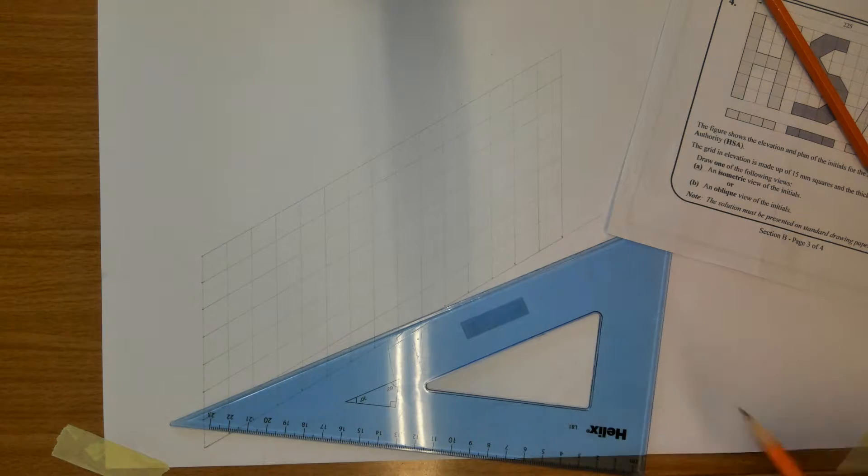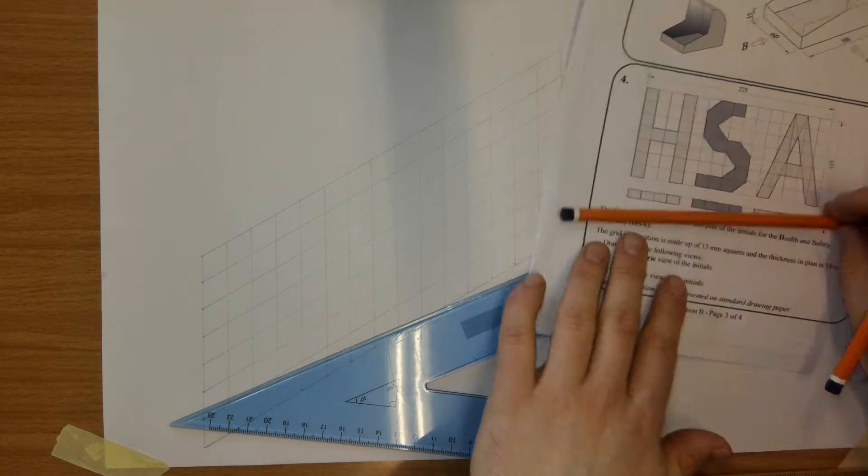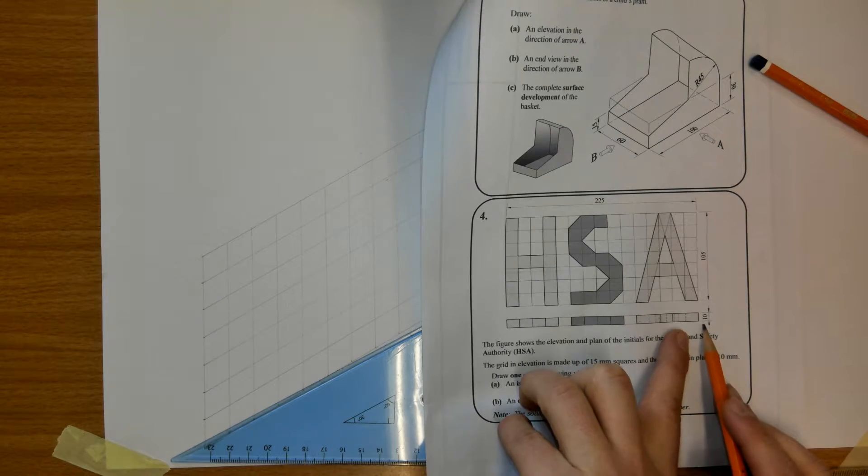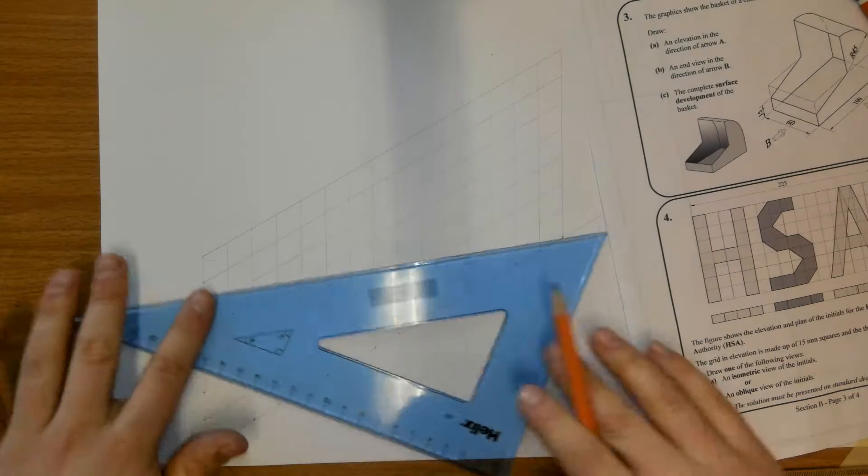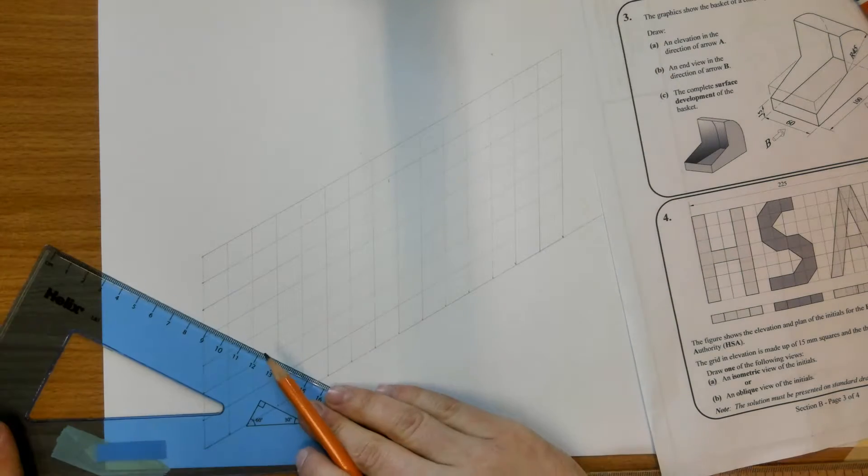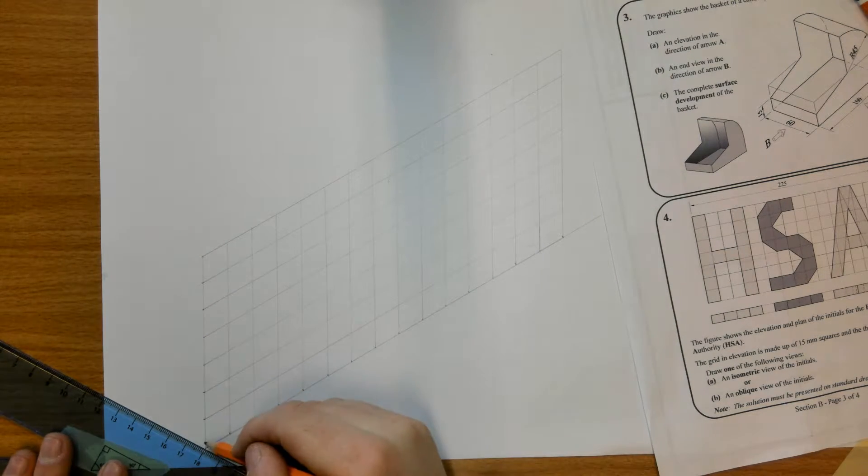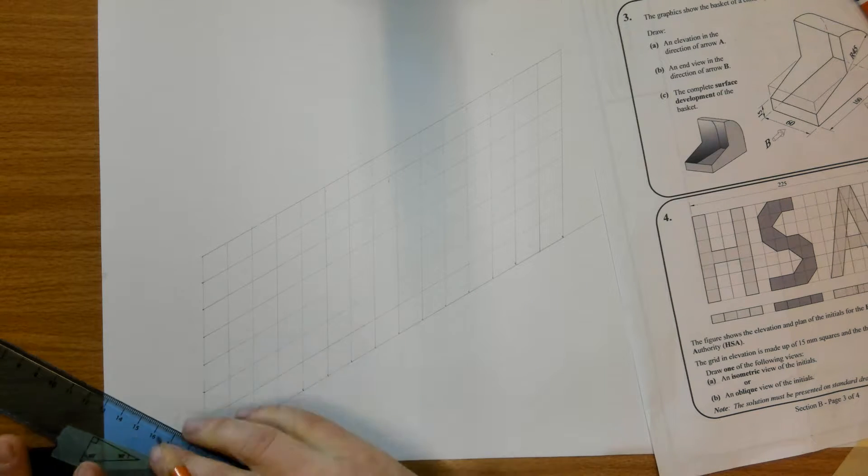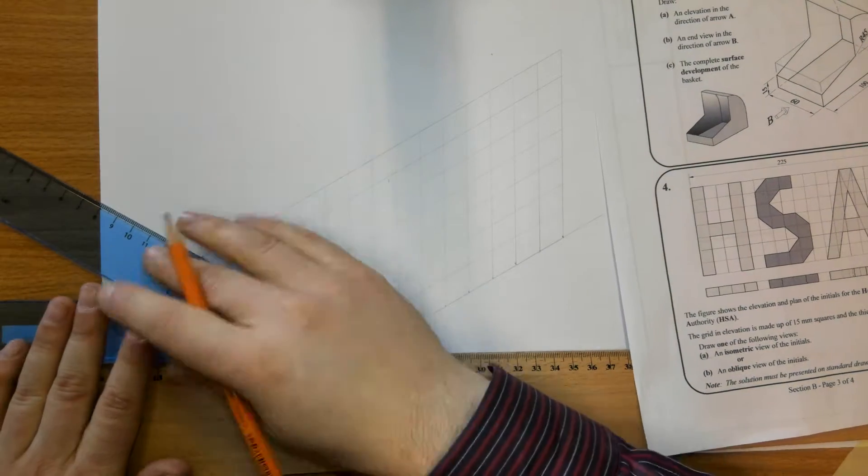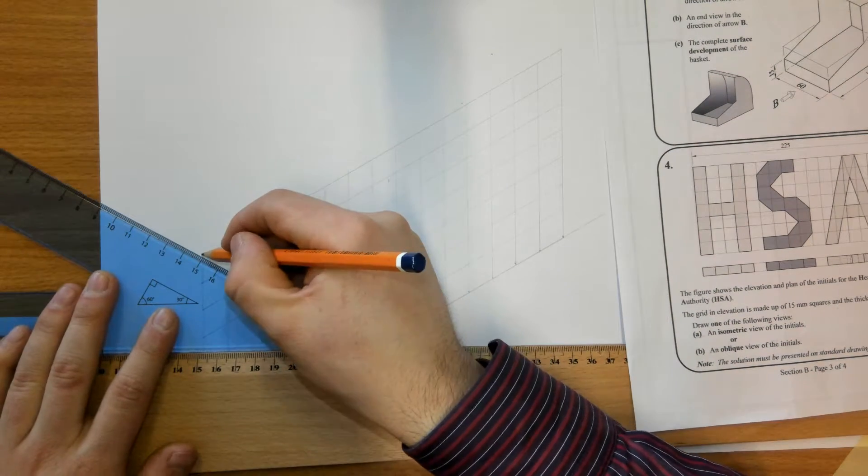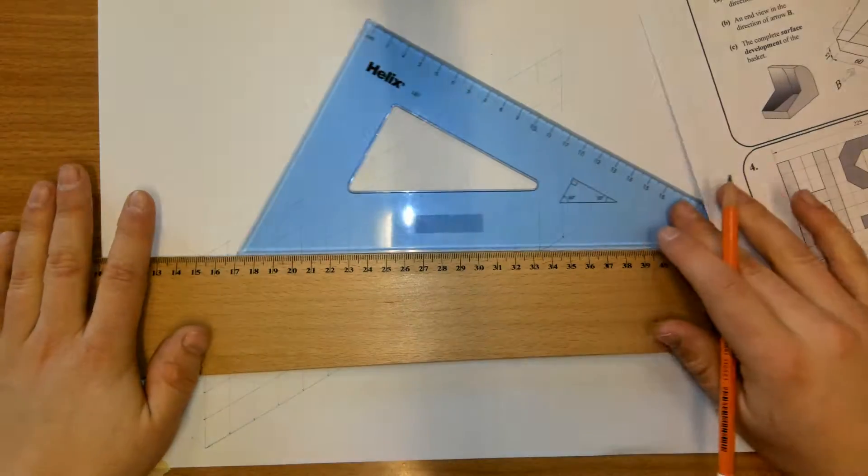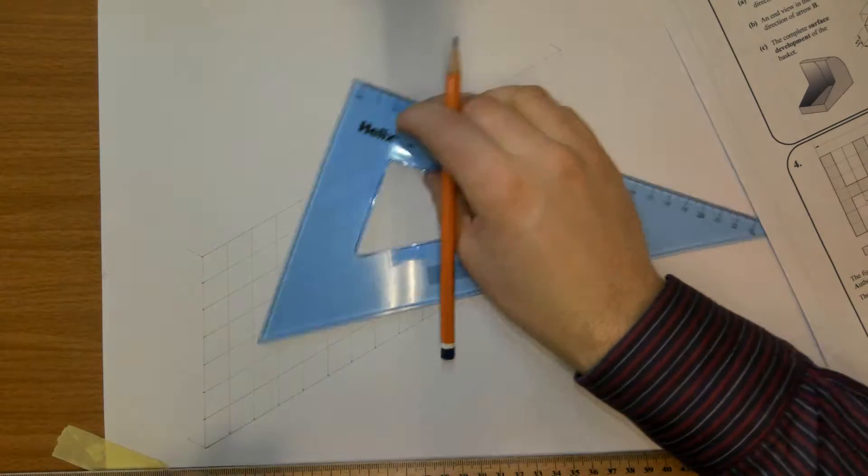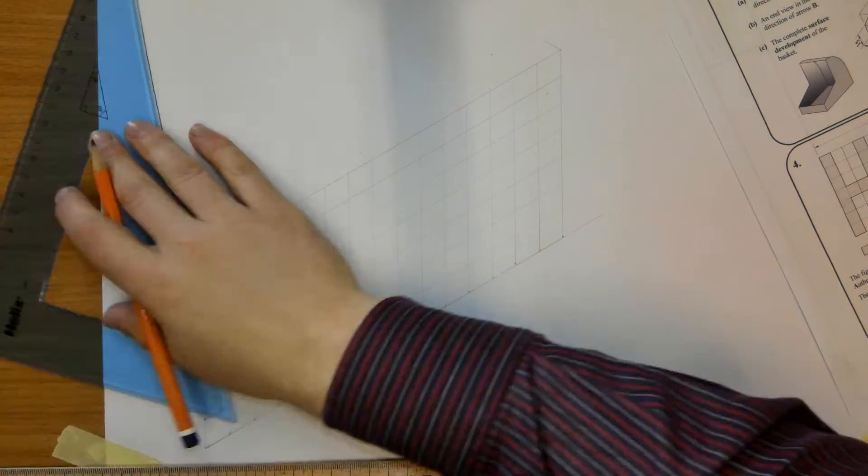Now we need to represent the thickness of the object. It says this is going to be 10 millimeters thick in plan view. We're going to turn our 30-degree set square around and mark a 30-degree line here from the bottom left corner, going back a distance of 10. We can go up here as well, lightly back the same distance, and over here at 30 degrees, then connect these points up.